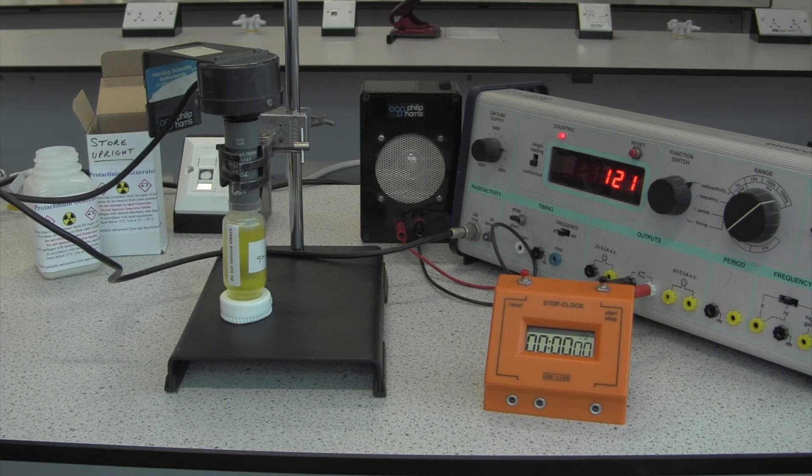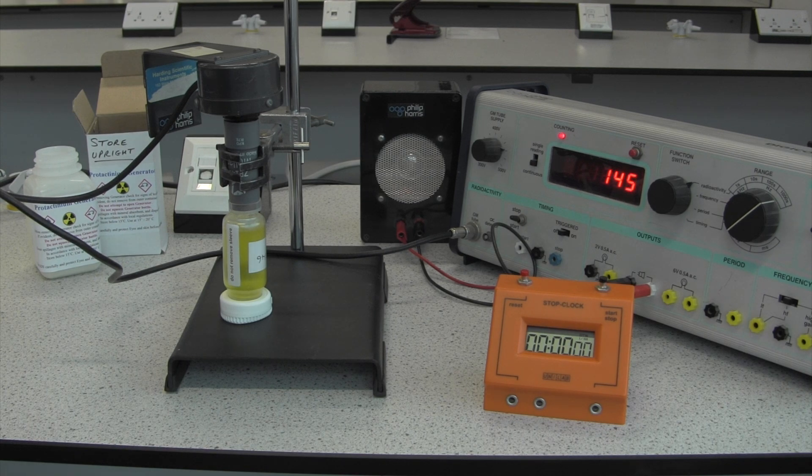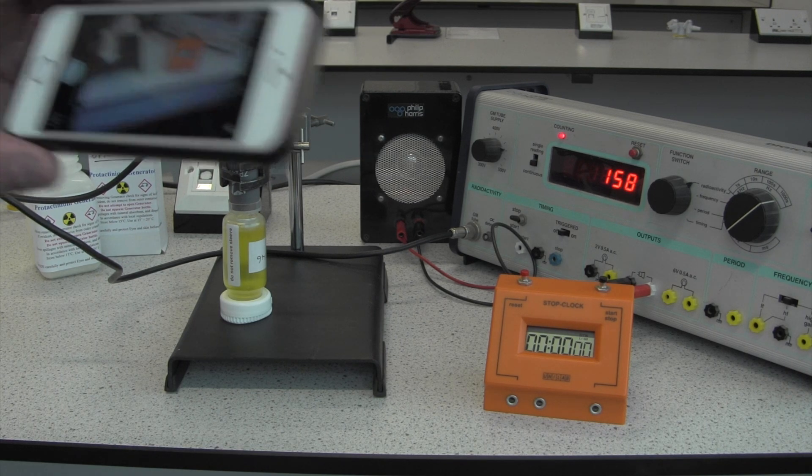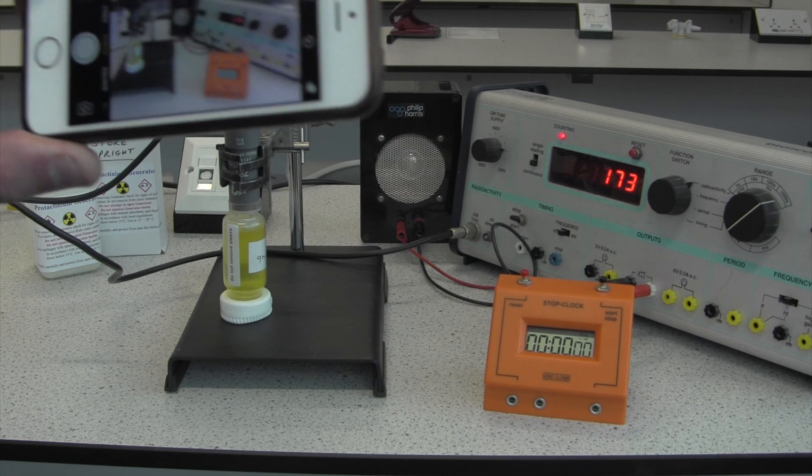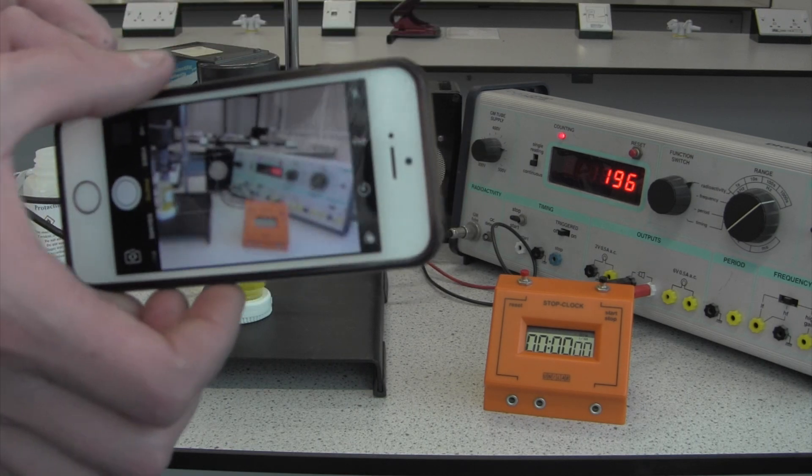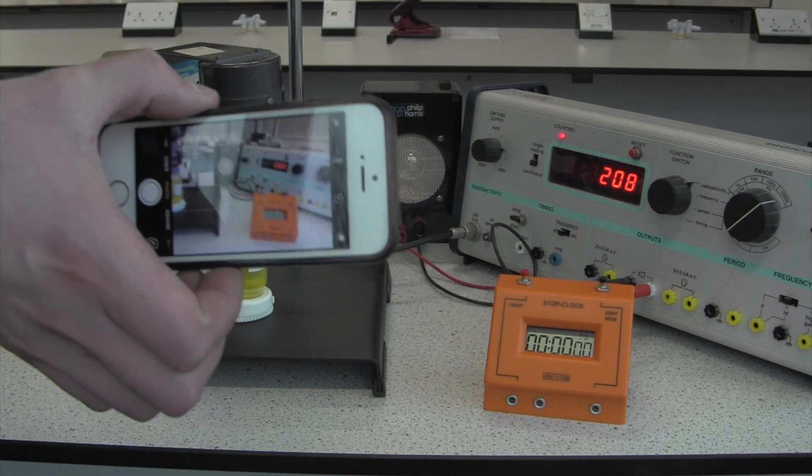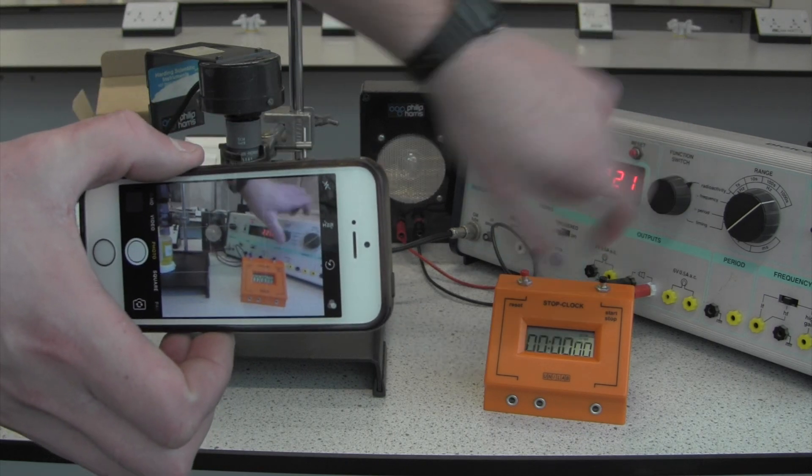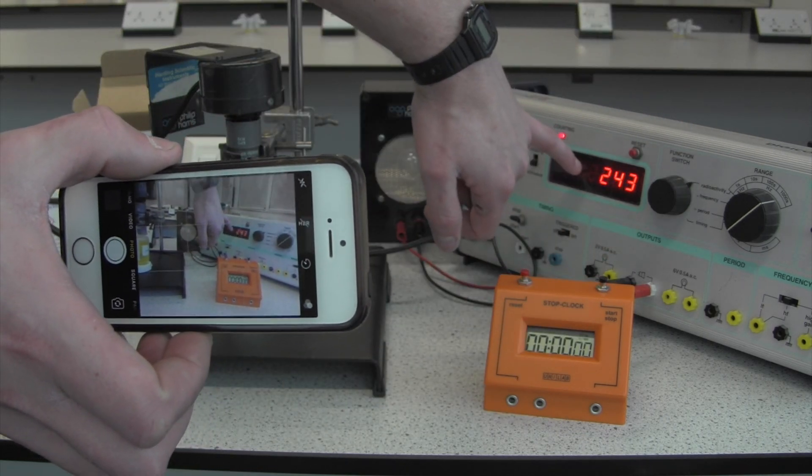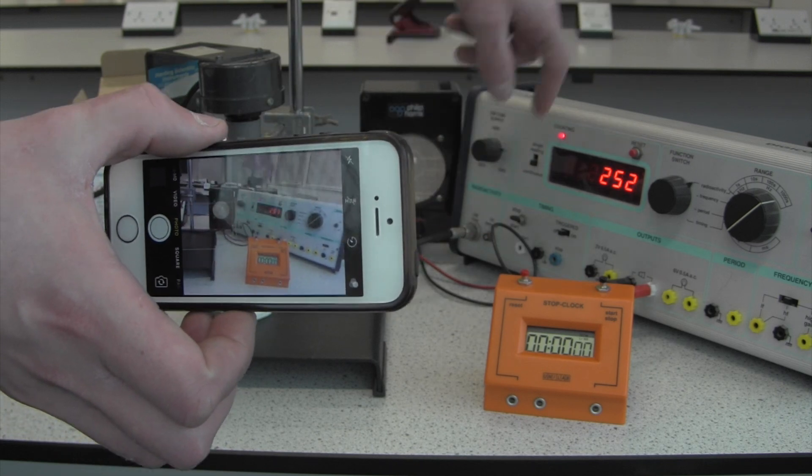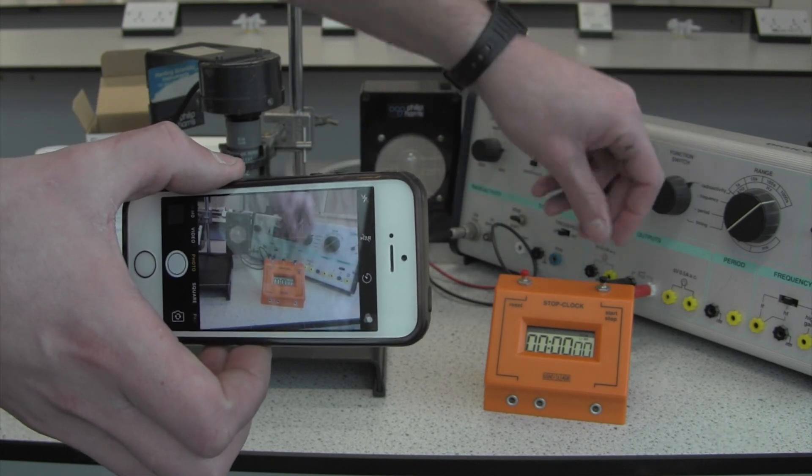And when you're collecting data of how something changes over time, the best way that I've found to do it is just to use your camera and video the timer and the display here at the same time, and then review that footage later on. So we're going to reset it, start the stop clock.